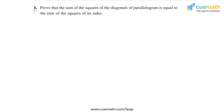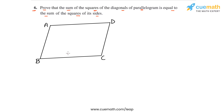Question 6 of this exercise says: prove that the sum of the squares of the diagonals of a parallelogram is equal to the sum of the squares of its sides. Let's draw a figure to understand this problem statement. Here's a parallelogram ABCD, and let's also draw the diagonals AC and BD. We have to prove that the sum of the squares of the diagonals equals the sum of the squares of its sides.